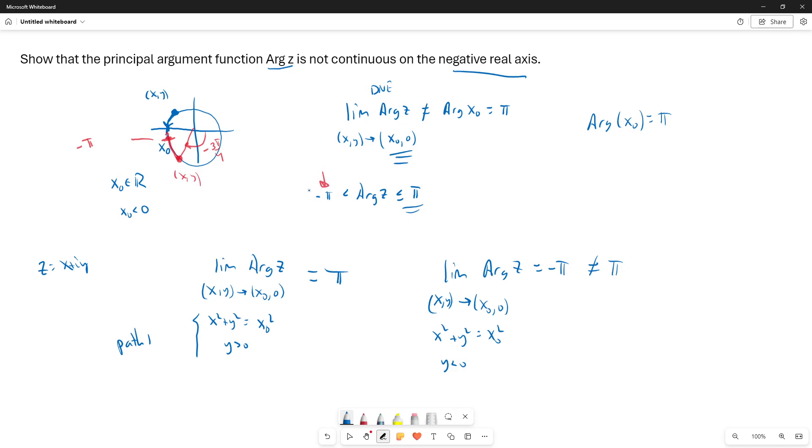So therefore our function is not continuous. We have a jump discontinuity on the negative axis. Arguments of points here are near π, and arguments of points here are near negative π. So we're going to have a jump discontinuity in the Arg function as we cross the negative real axis.